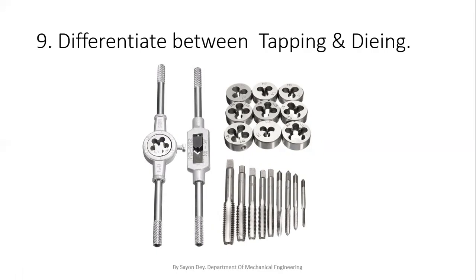The next question is: differentiate between tapping and dieing. Tapping, as just discussed, is used for internal threading — we use a tap for that. But on the left-hand side we can see this tool, which is called a die. The operation using a die is called dieing. A die is used to cut external threads. So the main difference is: tapping is for internal threads and dieing is for external threads.